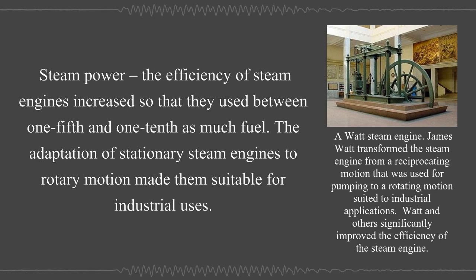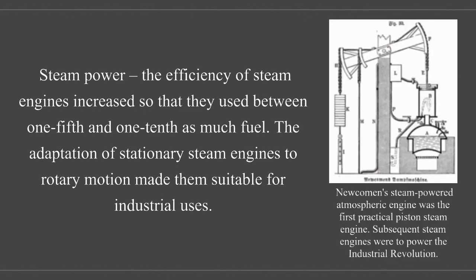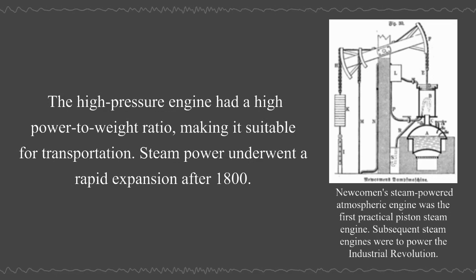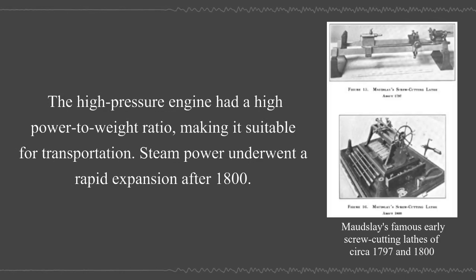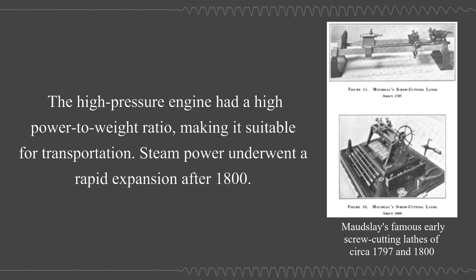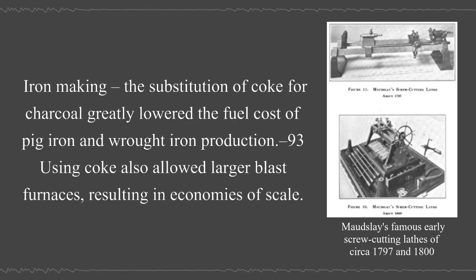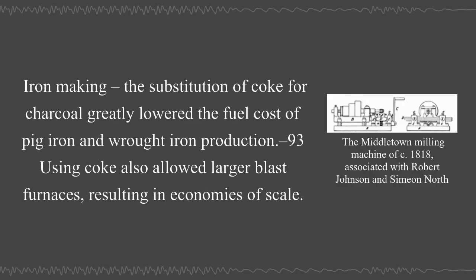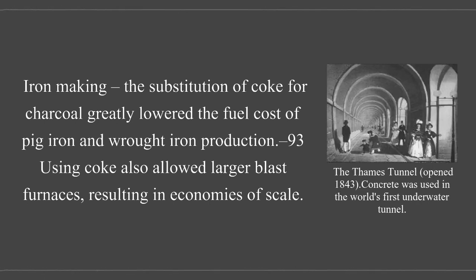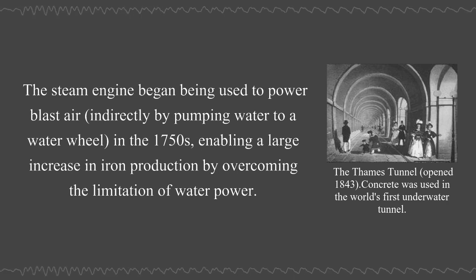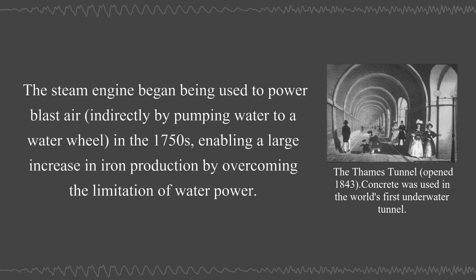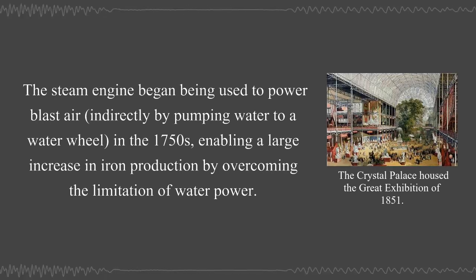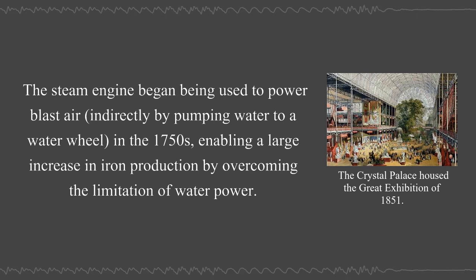In steam power, the efficiency of steam engines increased so that they used between one-fifth and one-tenth as much fuel. The adaptation of stationary steam engines to rotary motion made them suitable for industrial uses. The high pressure engine had a high power-to-weight ratio, making it suitable for transportation. Steam power underwent a rapid expansion after 1800. In iron making, the substitution of coke for charcoal greatly lowered the fuel cost of pig iron and wrought iron production. Using coke also allowed larger blast furnaces, resulting in economies of scale. The steam engine began being used to power blast air by pumping water to a water wheel in the 1750s, enabling a large increase in iron production.